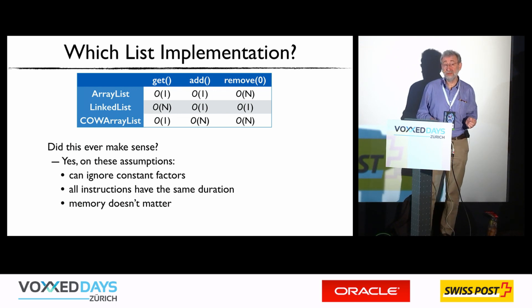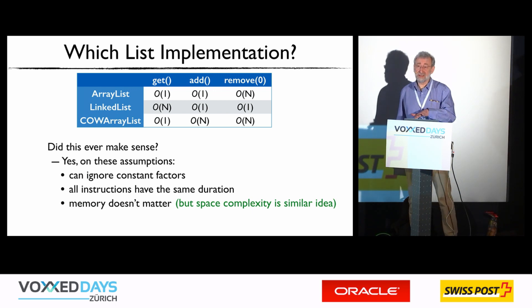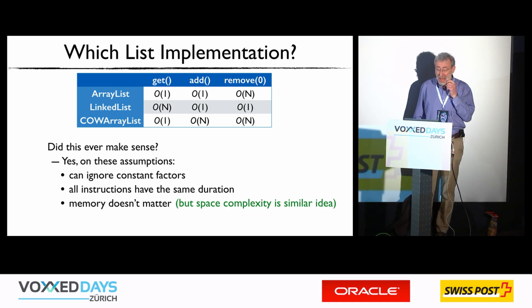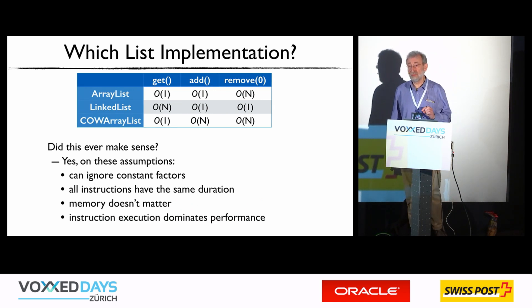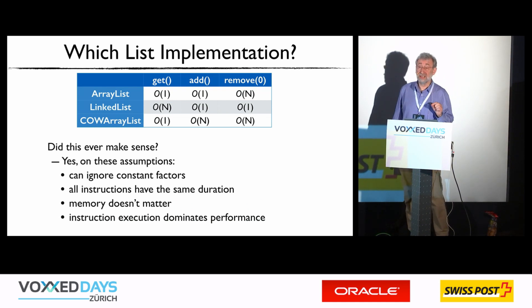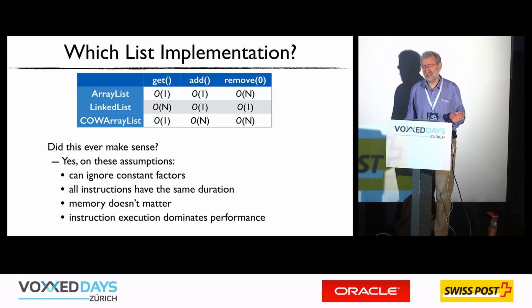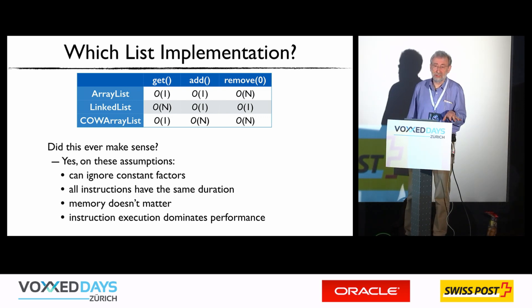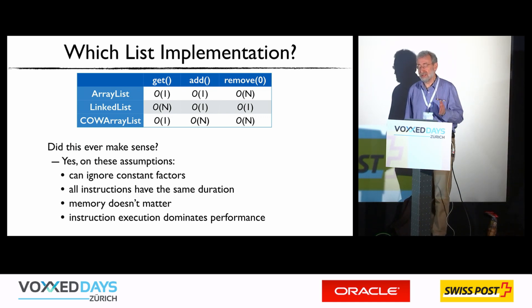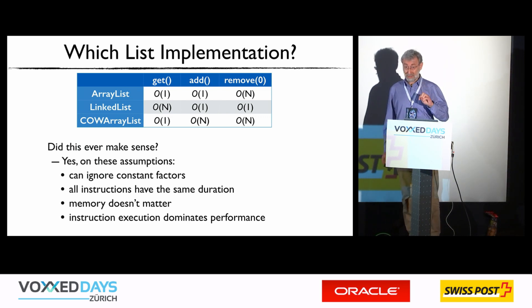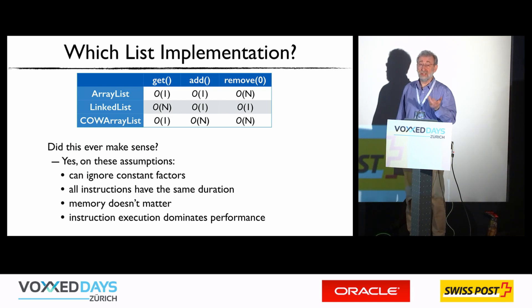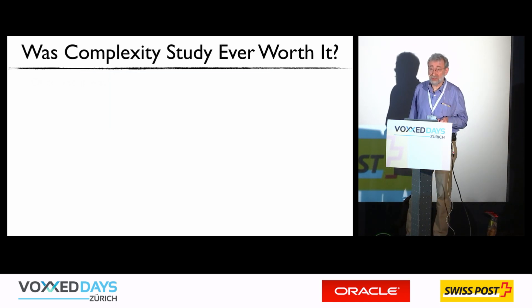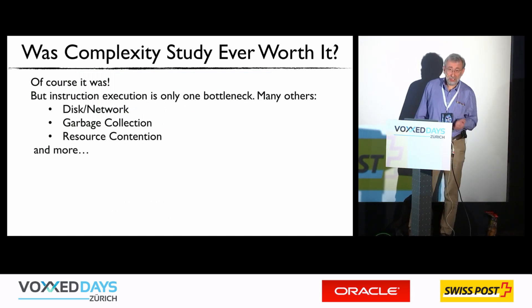The assumption that all instructions have the same duration is very much a simplifying assumption. Memory doesn't matter is another assumption, though there is an idea of space complexity that's similar. And the assumption that instruction execution dominates performance is clearly not always realistic. There are all these other kinds of things that affect execution time — disk access, network speeds, database performance — and those things actually reinforce the point from Donald Knuth that most of the time you don't want to be worrying about this stuff.